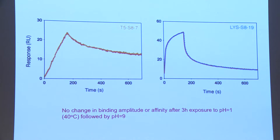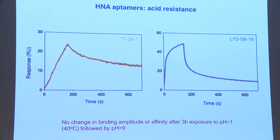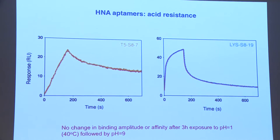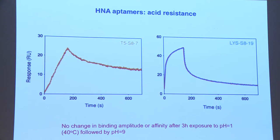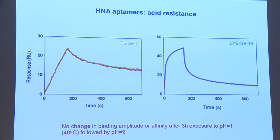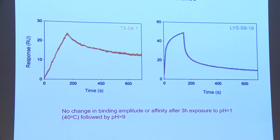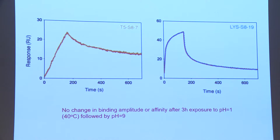These are non-degradable by nucleases — we've thrown the whole New England Biolabs catalog at them and they don't get degraded. They're also chemically quite stable. These are two BIAcore curves overlaid before and after a three-hour exposure to pH 1 at 40 degrees followed by pH 9. DNA does not survive this treatment — there's nothing left. While the two HNA aptamers show neither binding kinetics nor amplitude affected by this treatment.